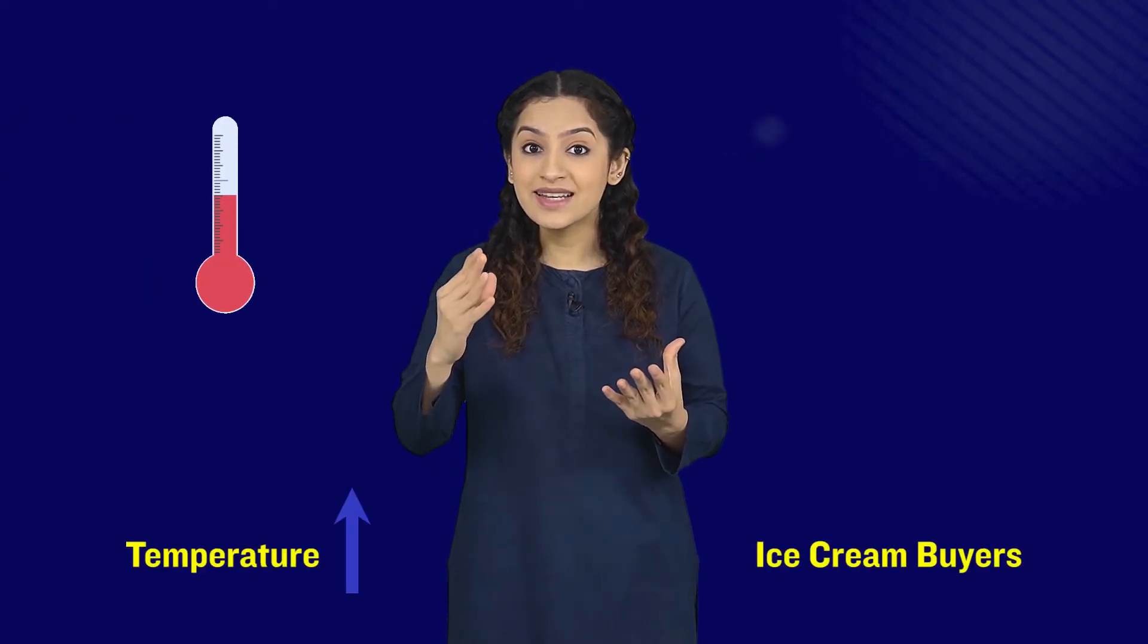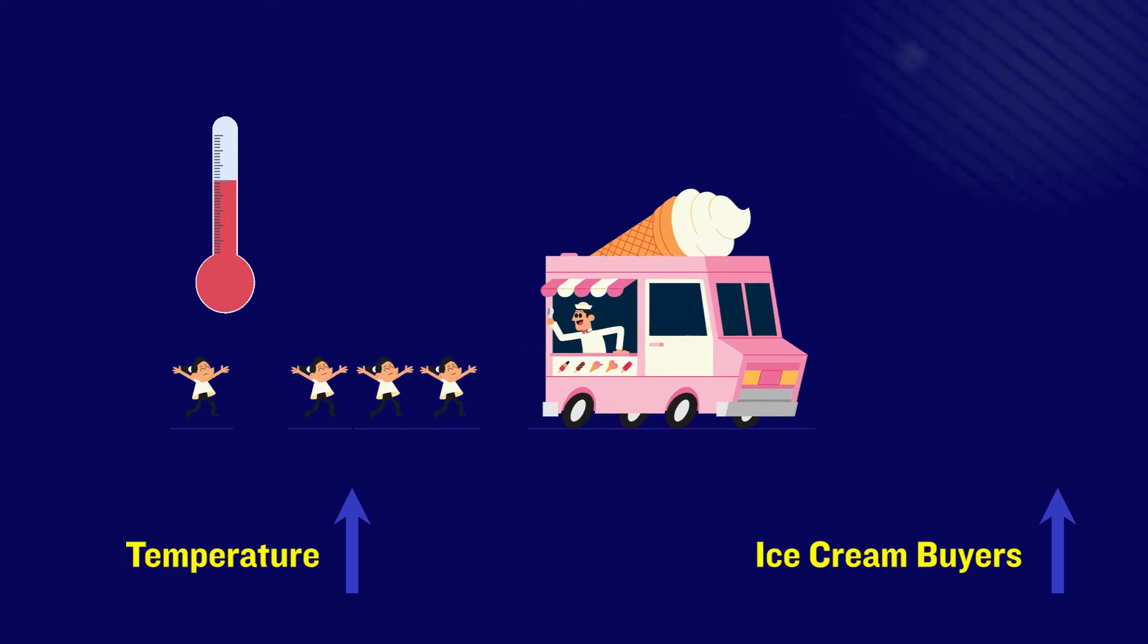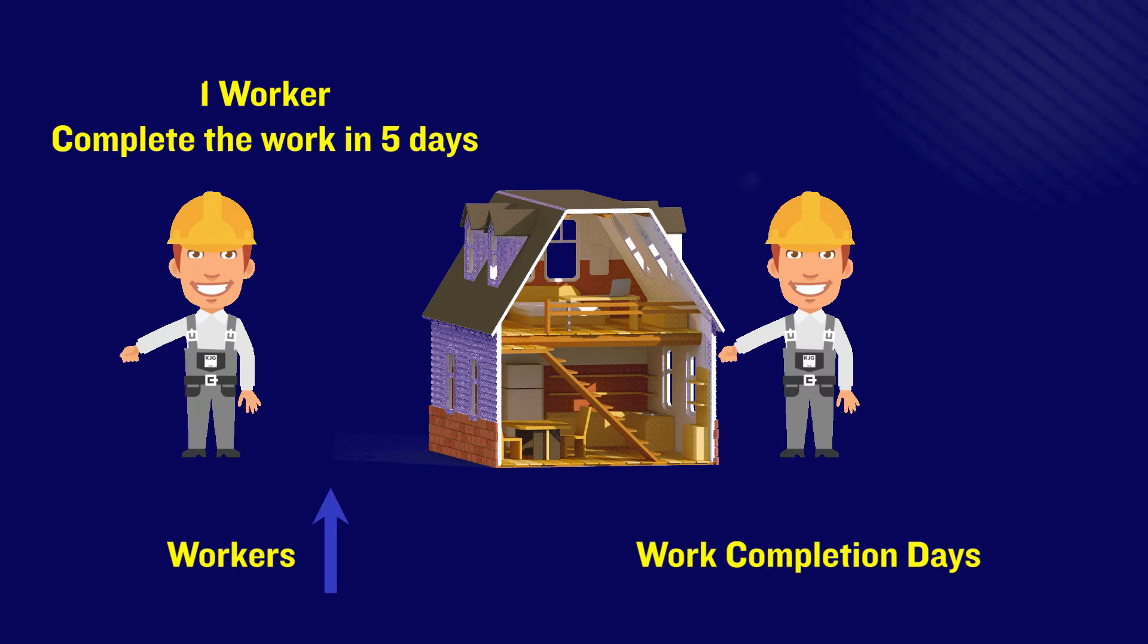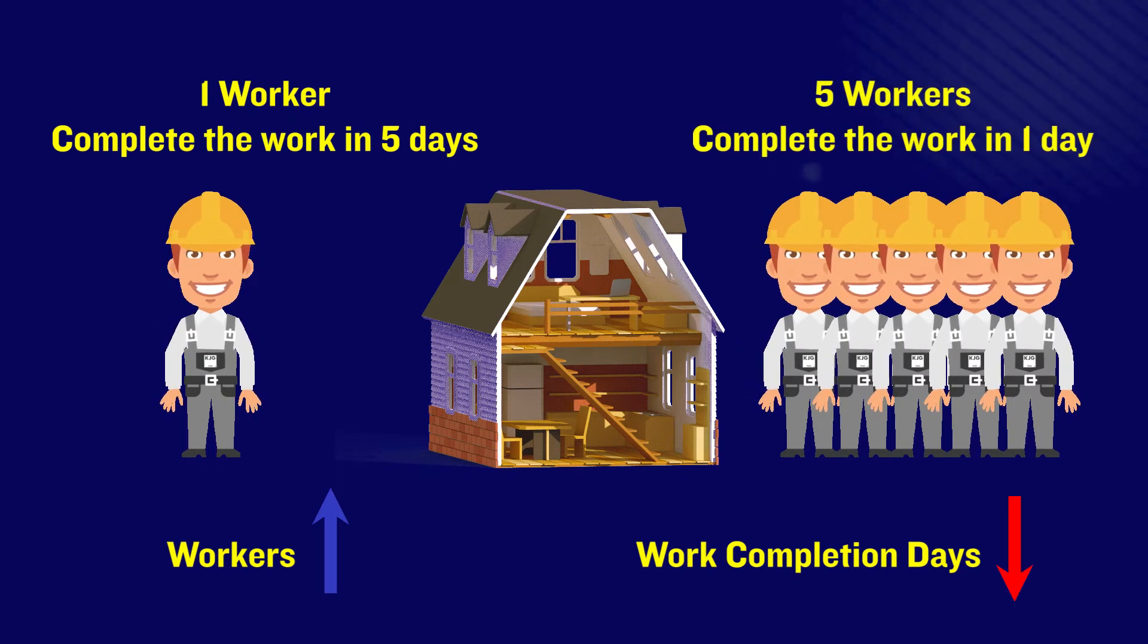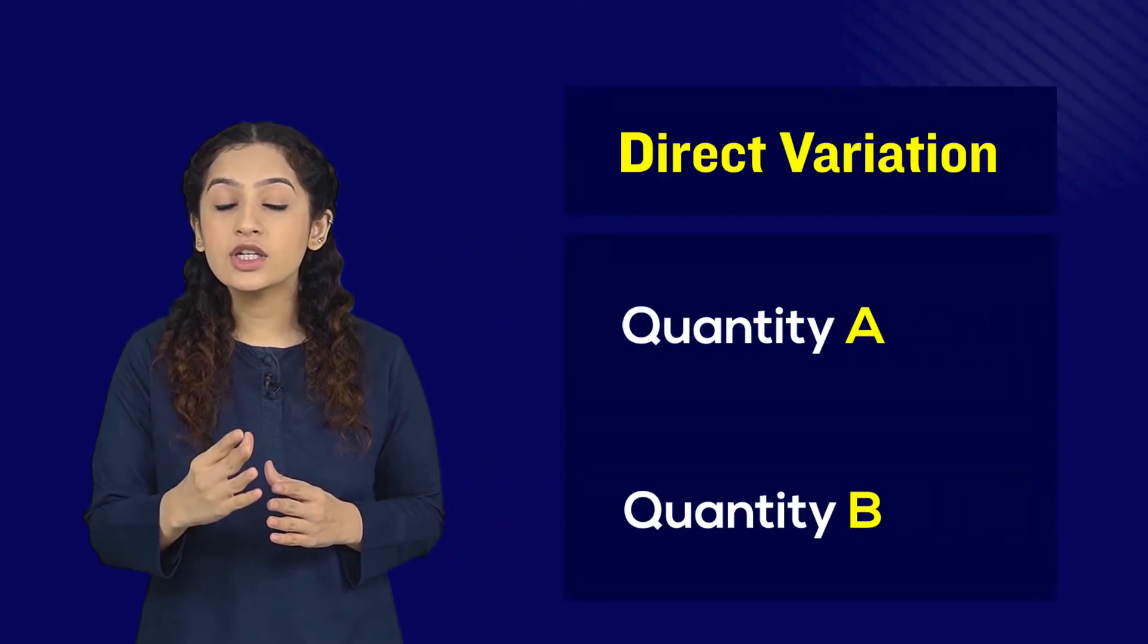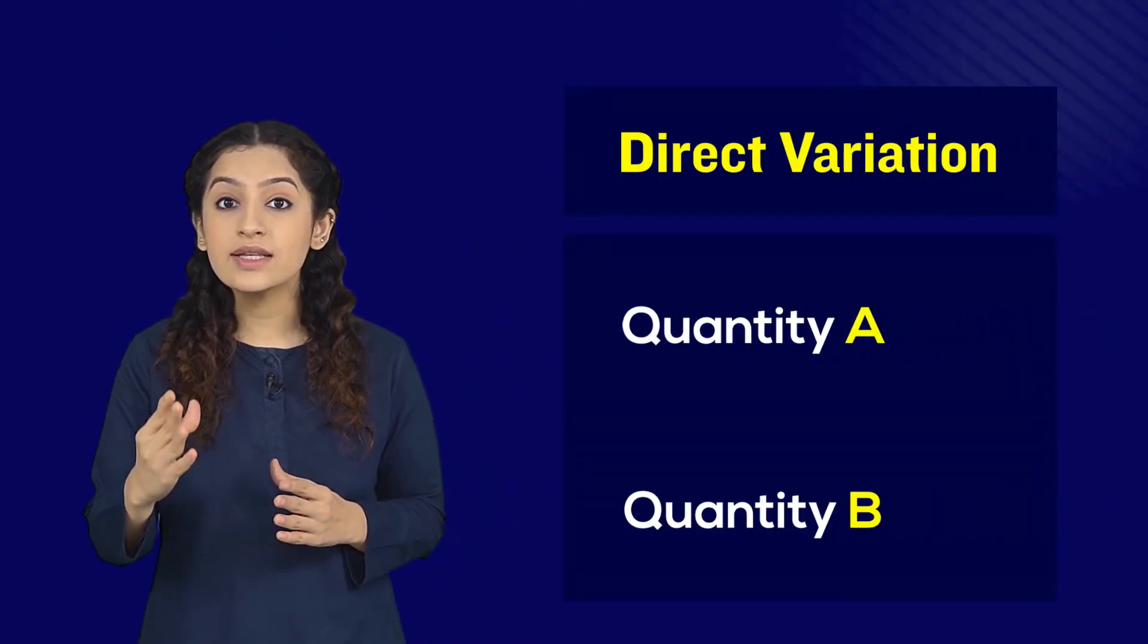Or when building a house, if the number of workers is increased, the work is finished in fewer days. Through these examples you just saw that there are two types of variations: direct and inverse. Direct variation is when one quantity increases with the increase in the other and vice versa.